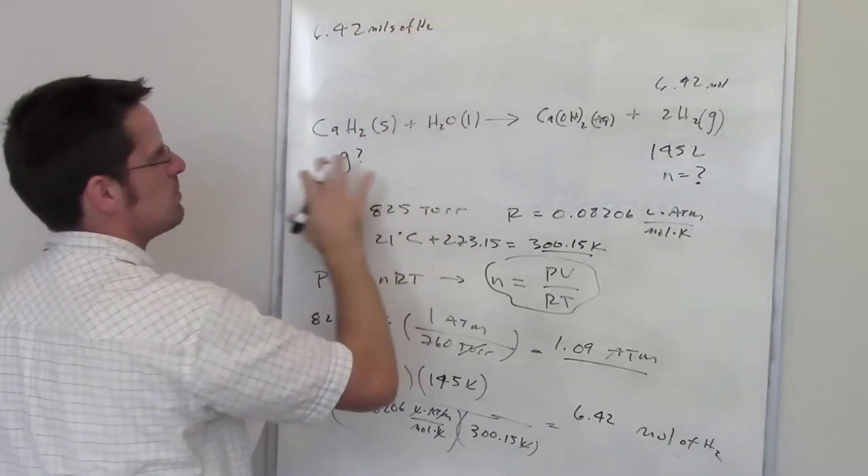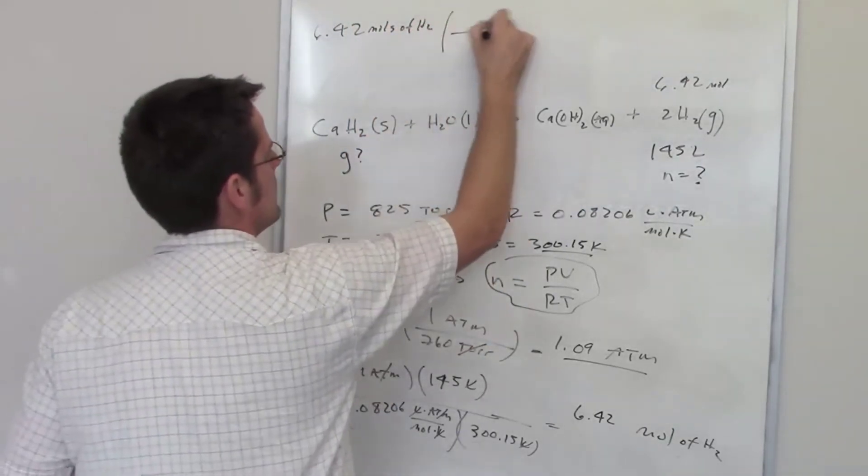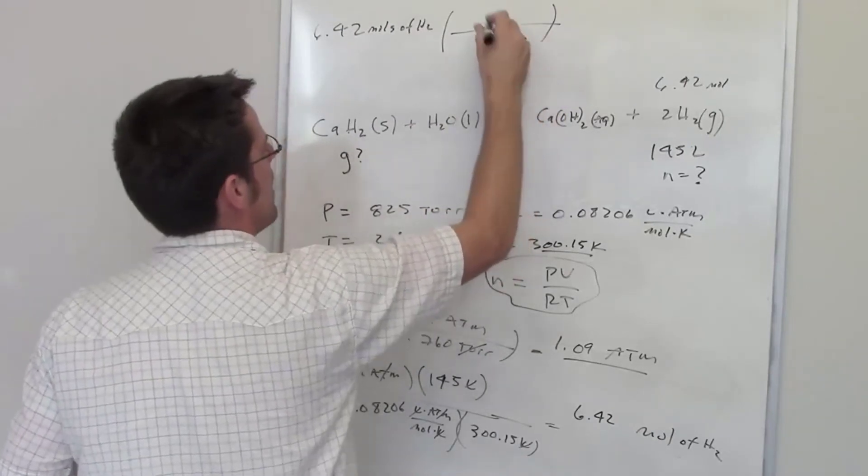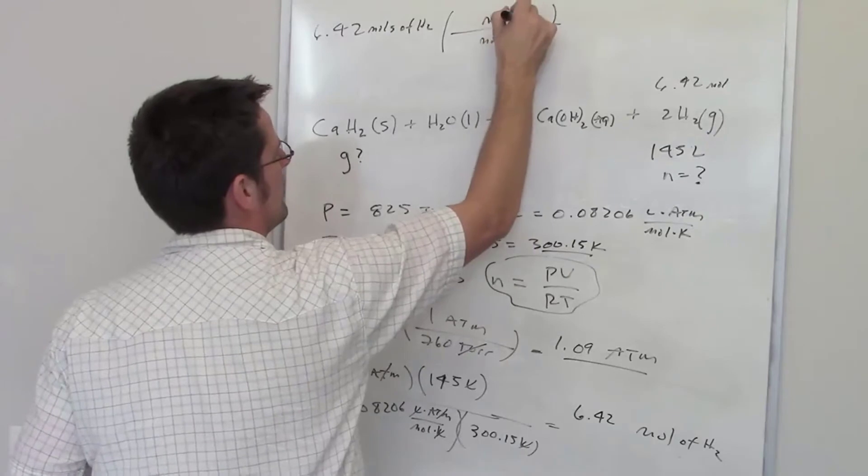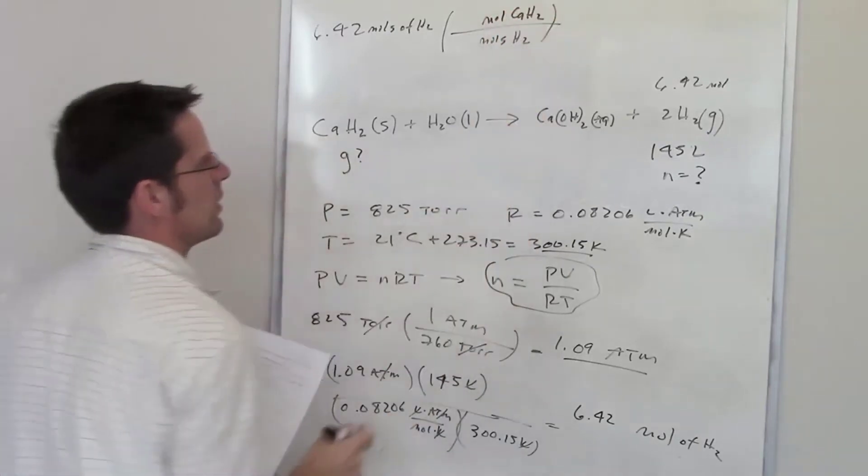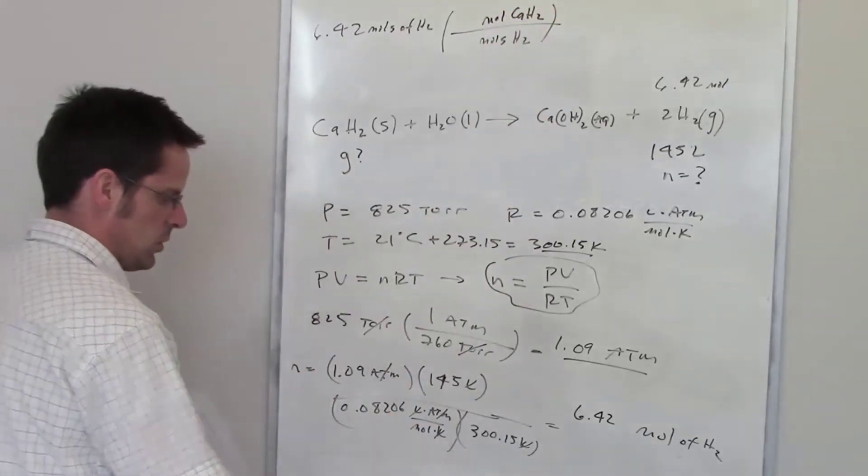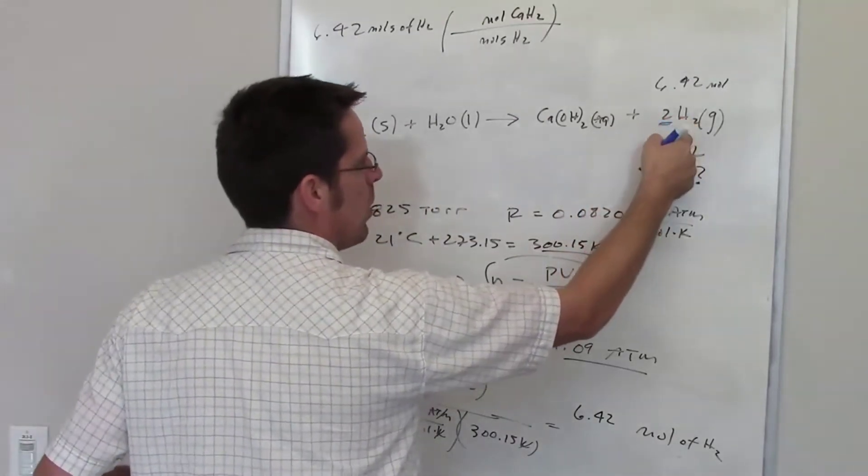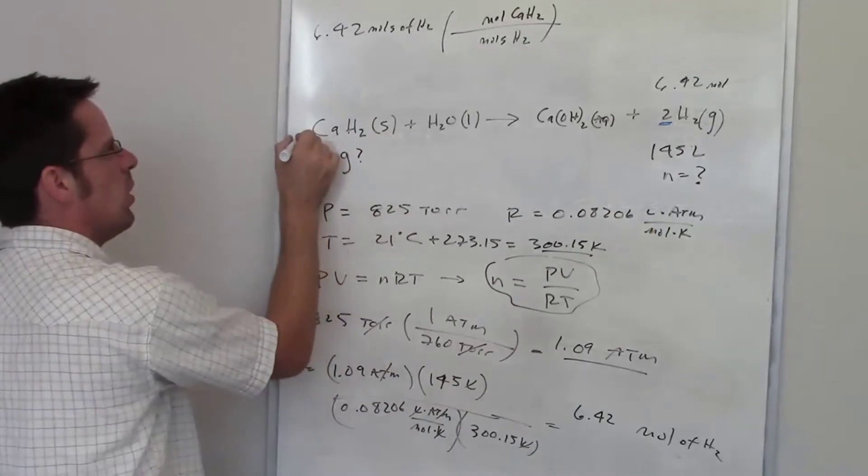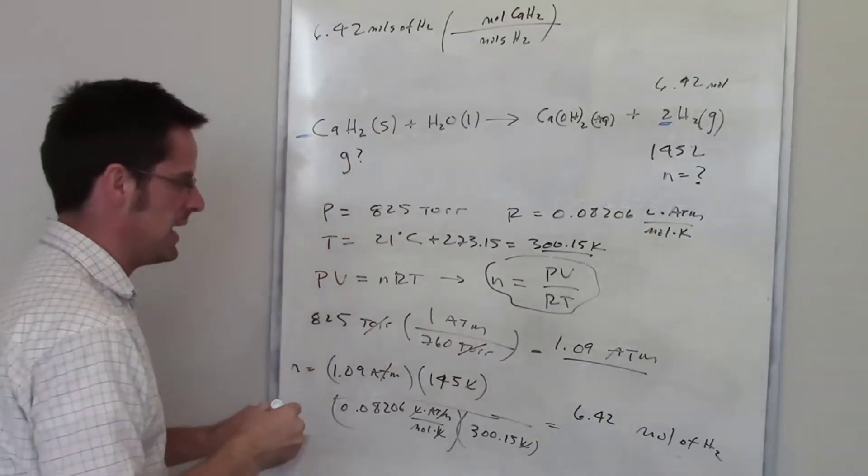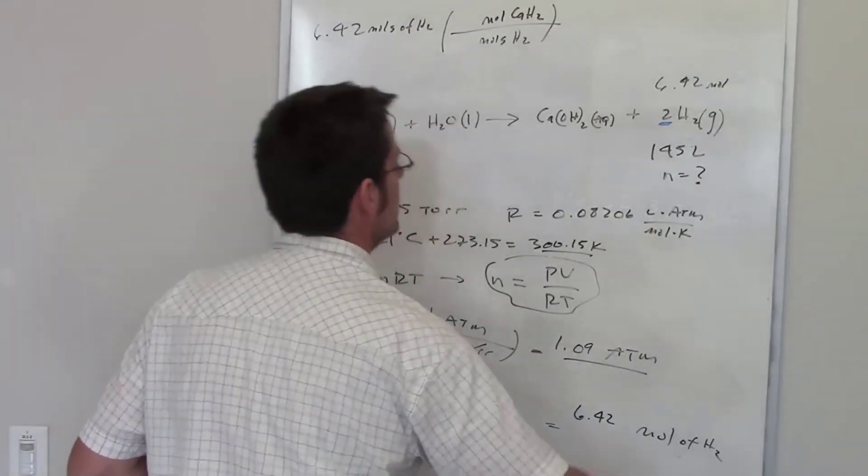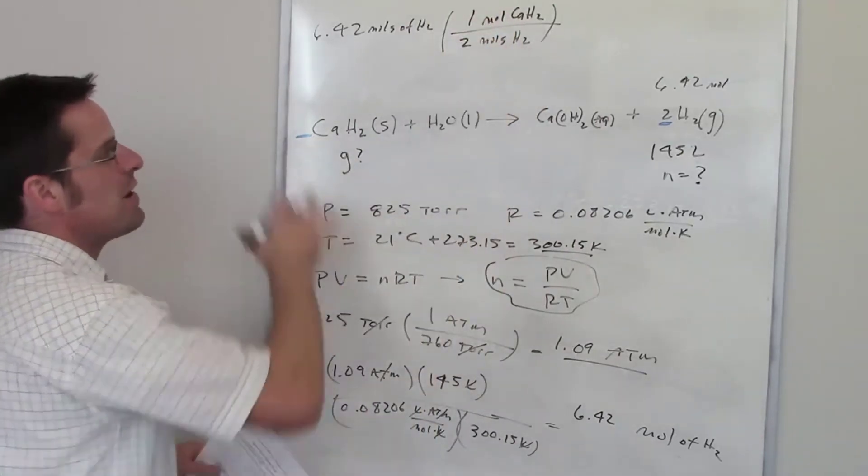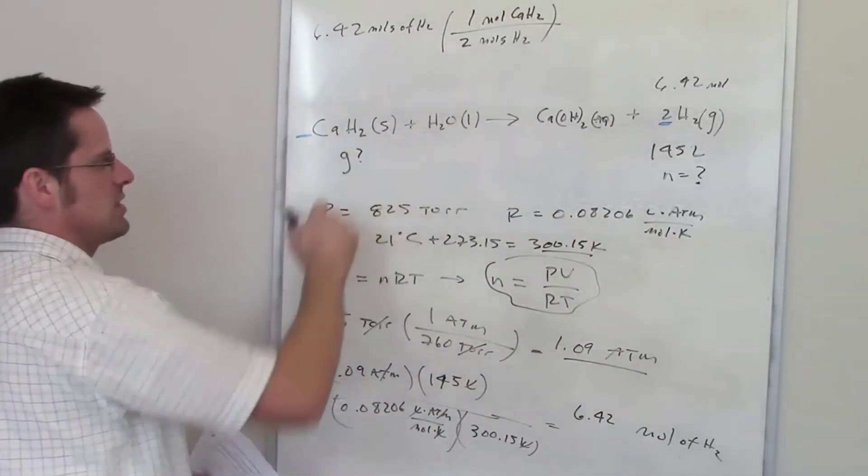What I want is to make 6.42 moles of H2. This is a balanced chemical equation. I can write moles of H2 in the denominator and then moles of calcium hydride in the numerator. In this balanced chemical reaction, there are two moles of H2 for every one mole of calcium hydride. So I can put one mole of calcium hydride for every two moles of hydrogen. That would tell me how many moles of calcium hydride I need.